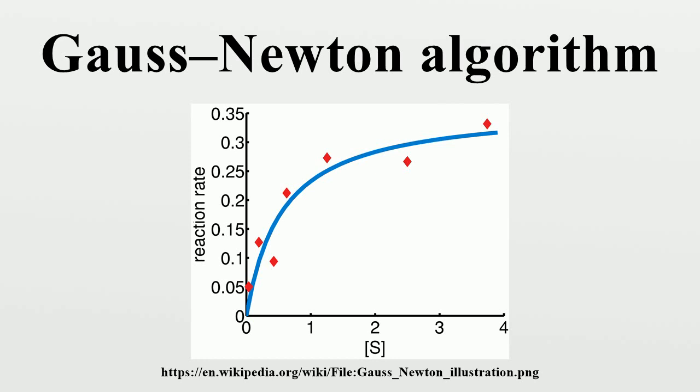In this example, the Gauss-Newton algorithm will be used to fit a model to some data by minimizing the sum of squares of errors between the data and model's predictions.